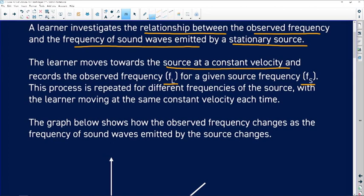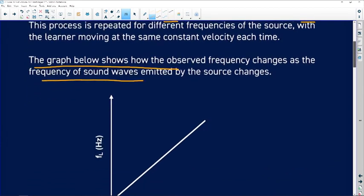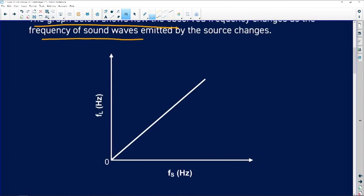It says here the graph below shows how the observed frequency changes as the frequency of sound waves emitted by the source changes. So let's go to our graph now. On the y-axis of the graph we are given the frequency of the listener, and then here we are given the frequency of the source.